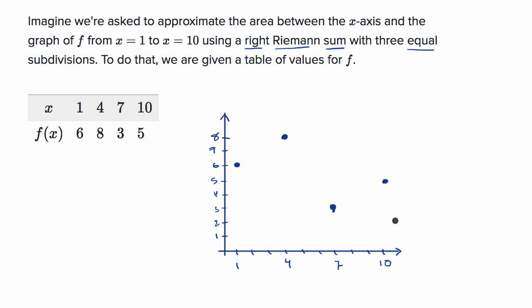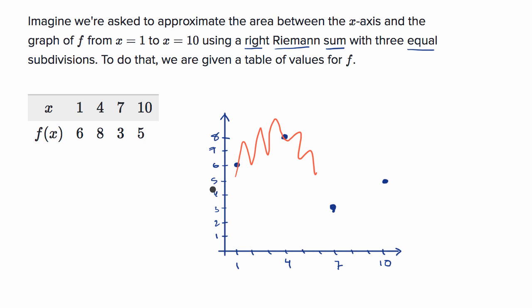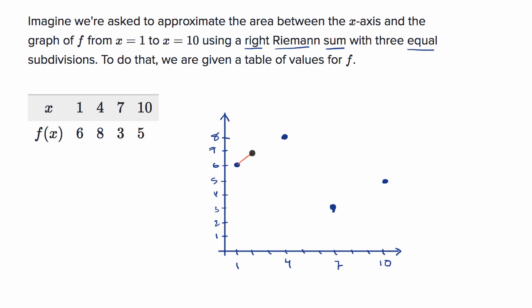That's all we know about the function. We don't know exactly what it looks like. Our function might oscillate really quickly, or it might be nice and smooth and just kind of connect the dots. We don't know. But we can still do the approximation using a right Riemann sum with three equal subdivisions.